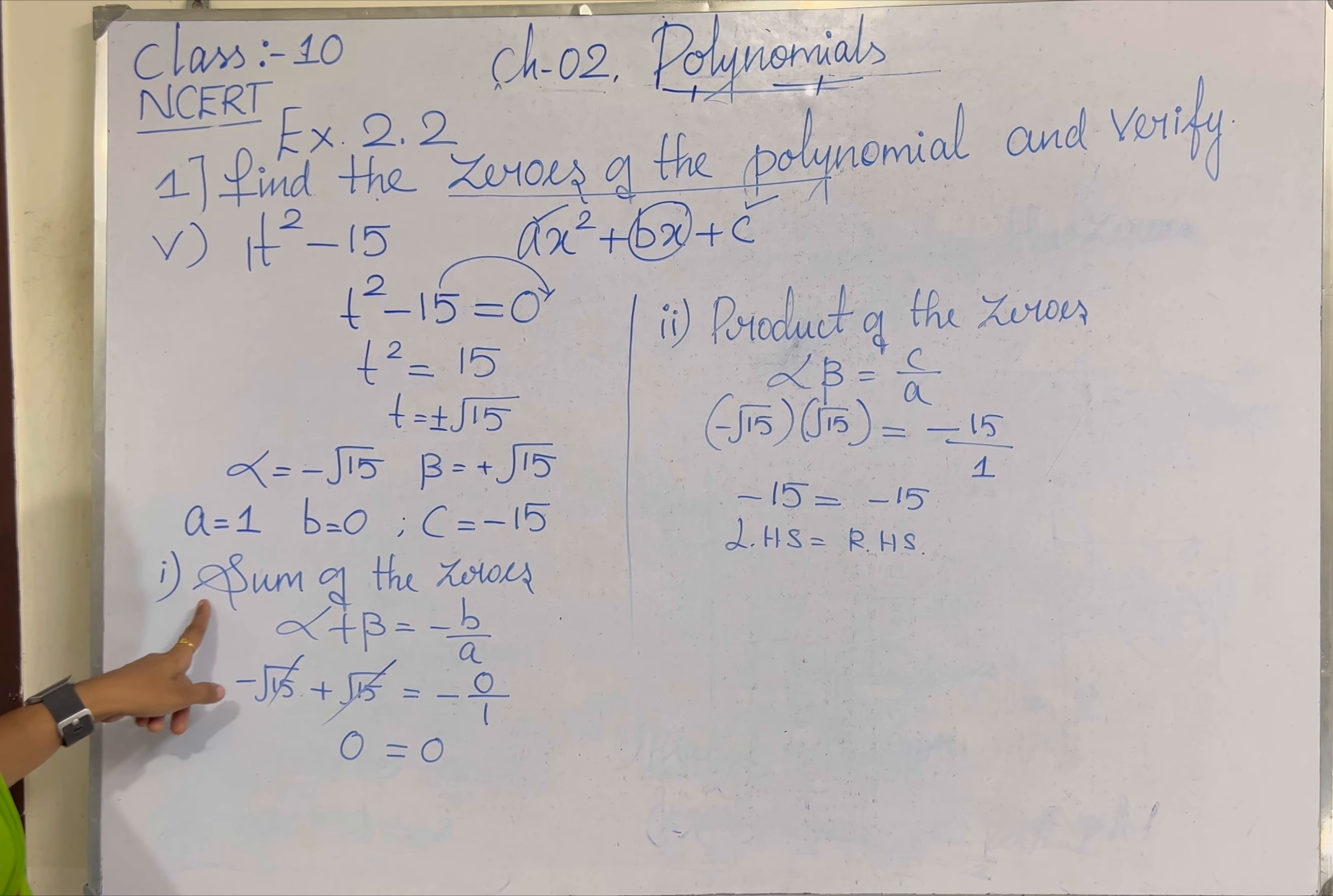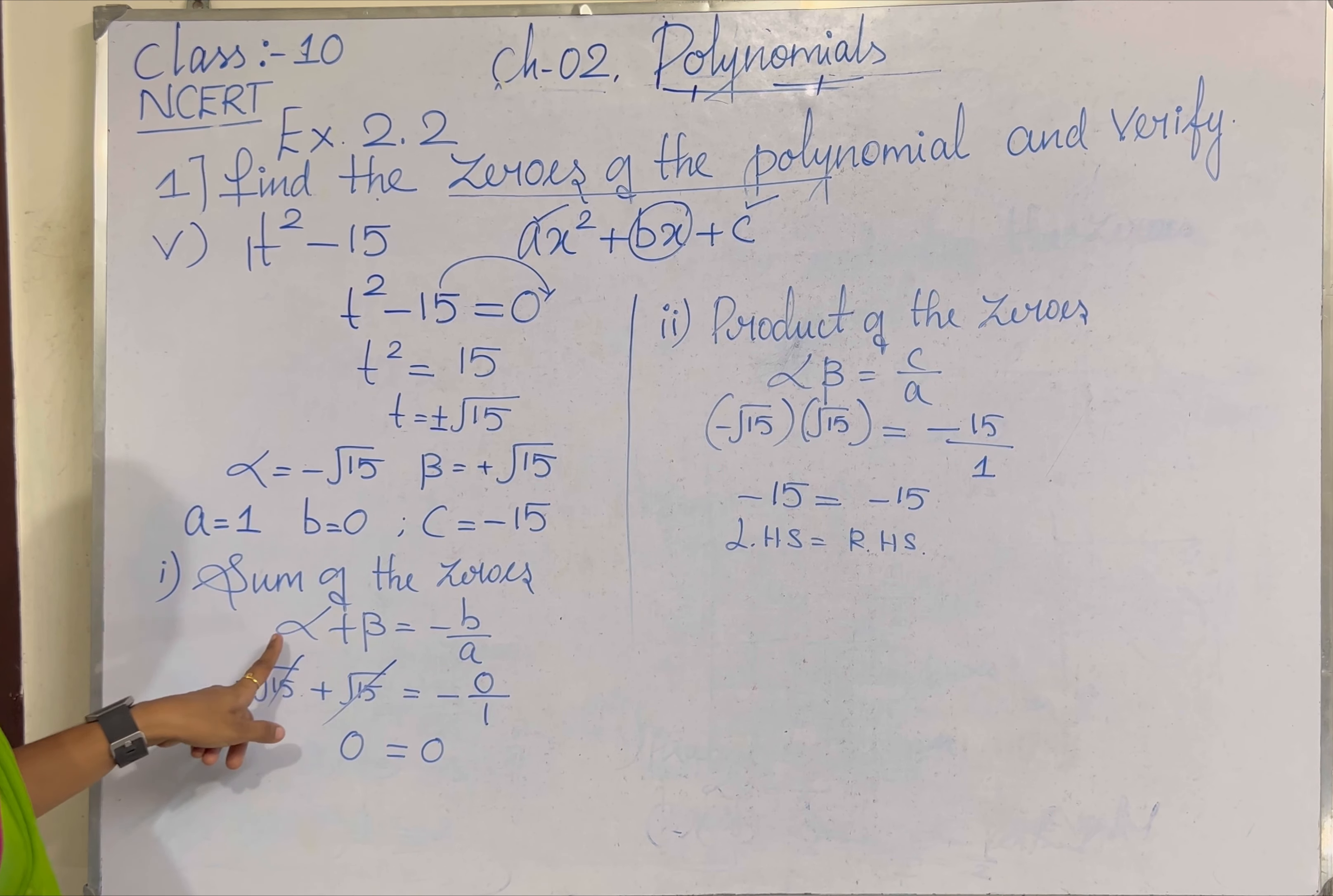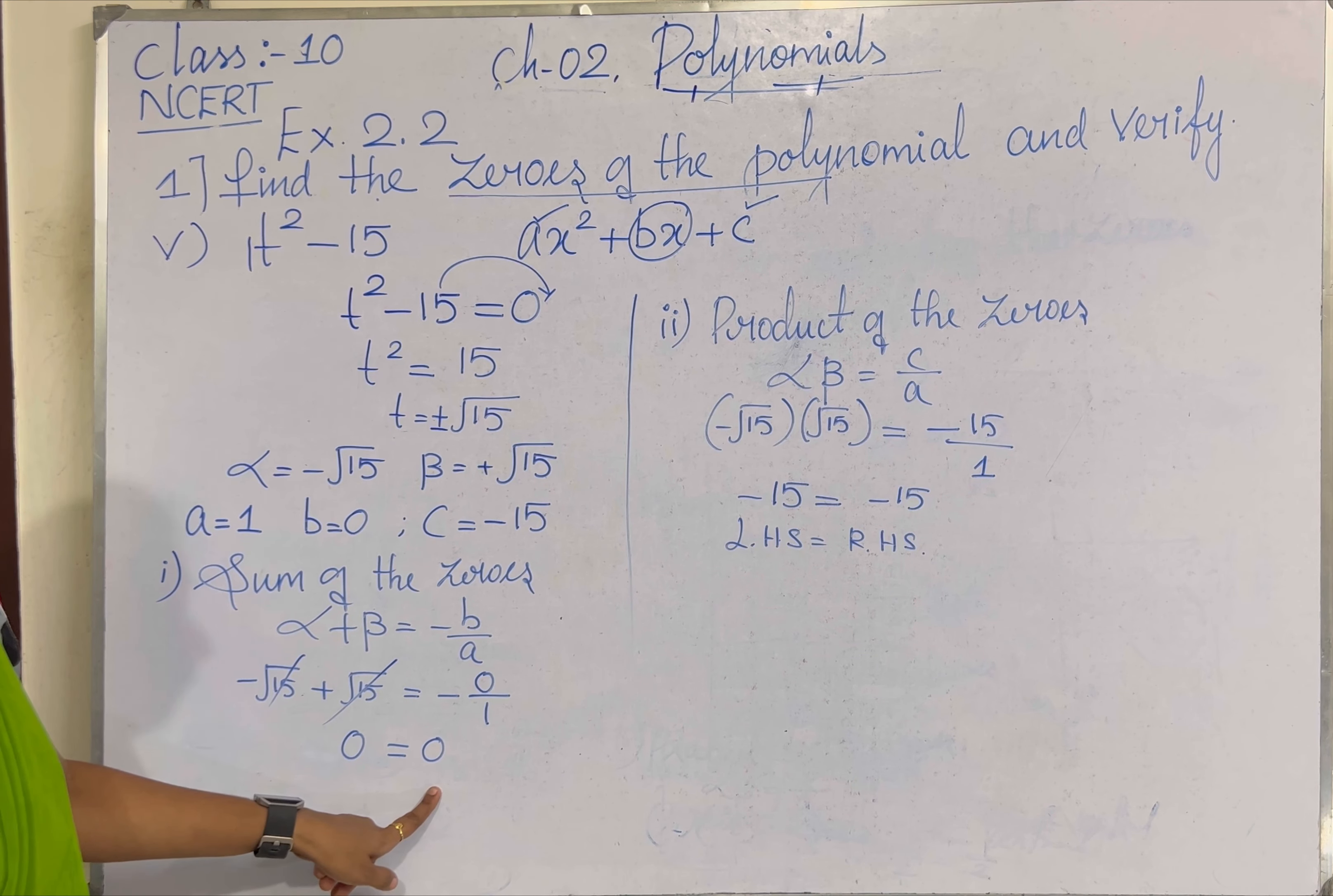Verifying relationship. First thing, sum of the zeros. Alpha plus beta equal to minus B by A. Alpha minus root 15, beta plus root 15, minus of 0 by 1. Left hand side is equal to right hand side.